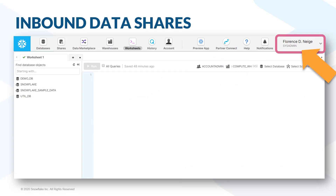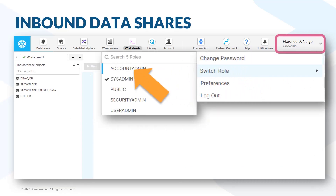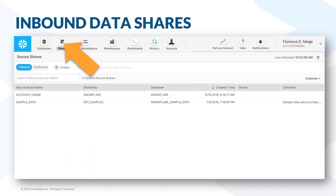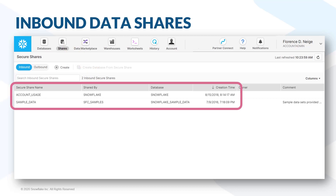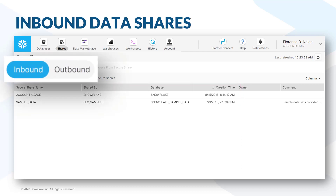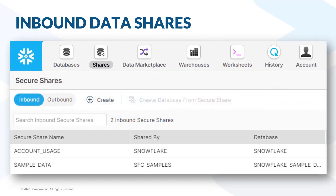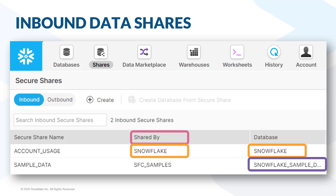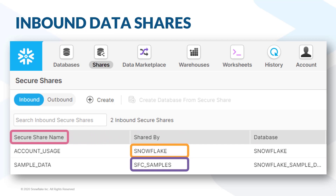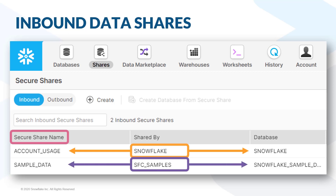If we go into the upper corner and change our account role to account admin, then navigate to the shares area, we can now see some detailed information about those two inbound shares. The shares area has a toggle for switching between inbound and outbound. Trial accounts start out with two inbound shares and no outbound shares. In the shared by column, we can see the Snowflake database is shared by Snowflake, and the Snowflake sample data database is shared by an account called SFC samples. The secure share name is the name given to the data share by its owner — Snowflake calls their share account usage, but it appears in your account as Snowflake. SFC samples calls their share sample data, but it appears in your account as Snowflake sample data.